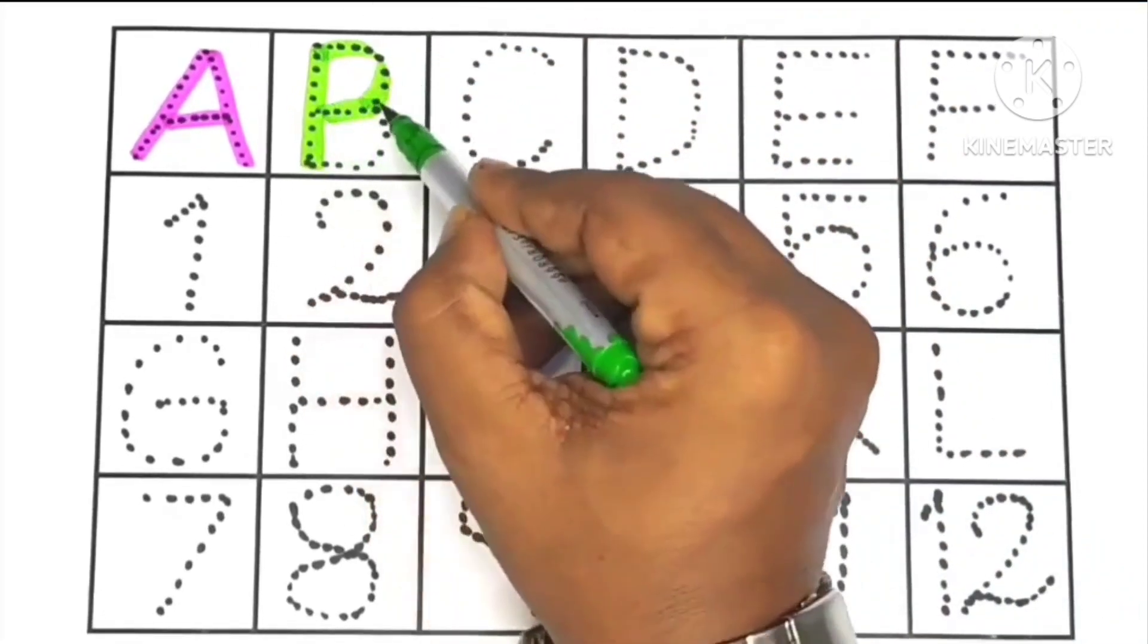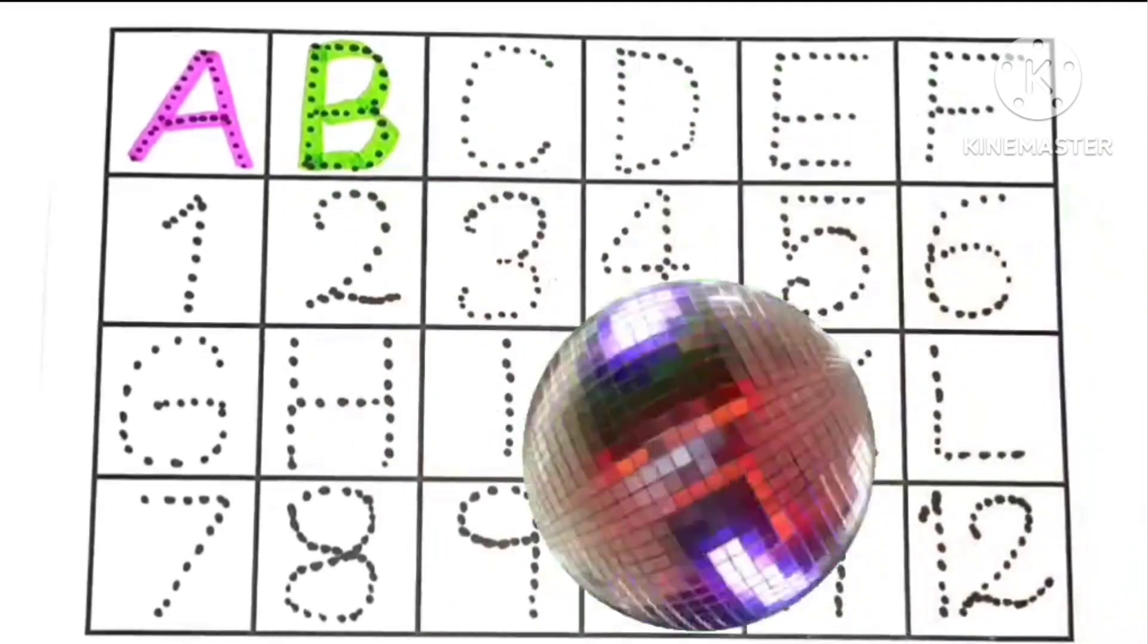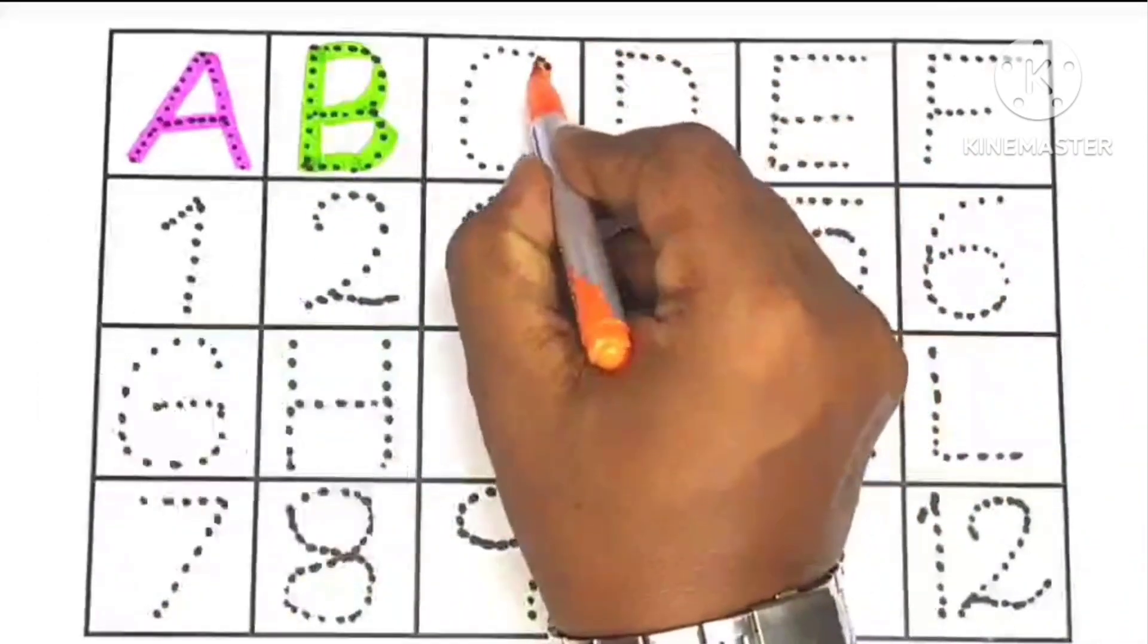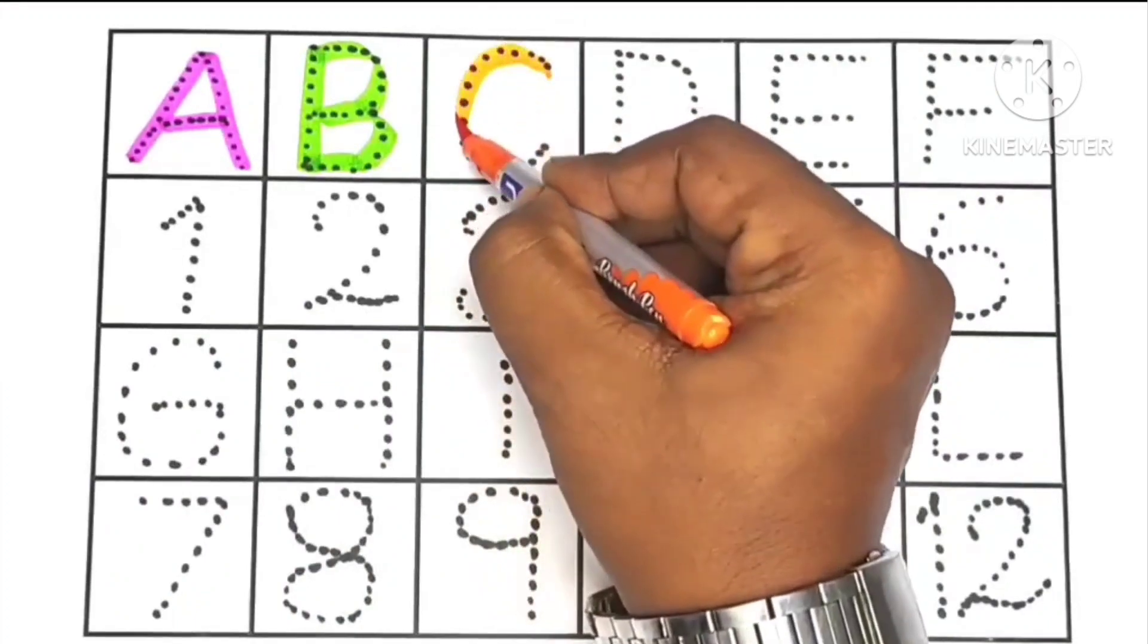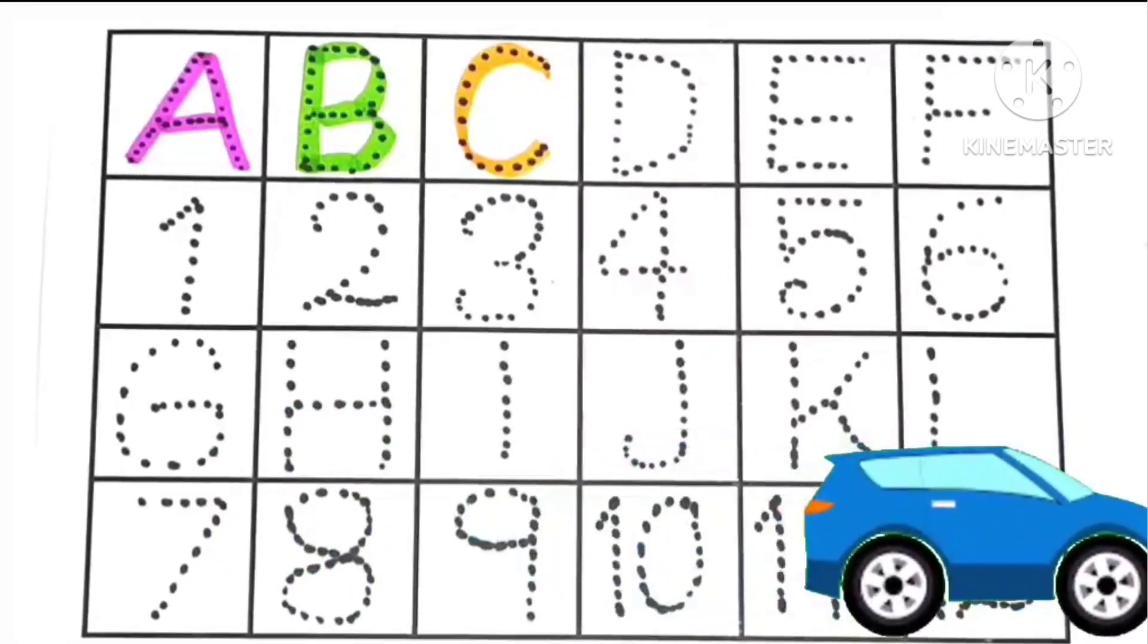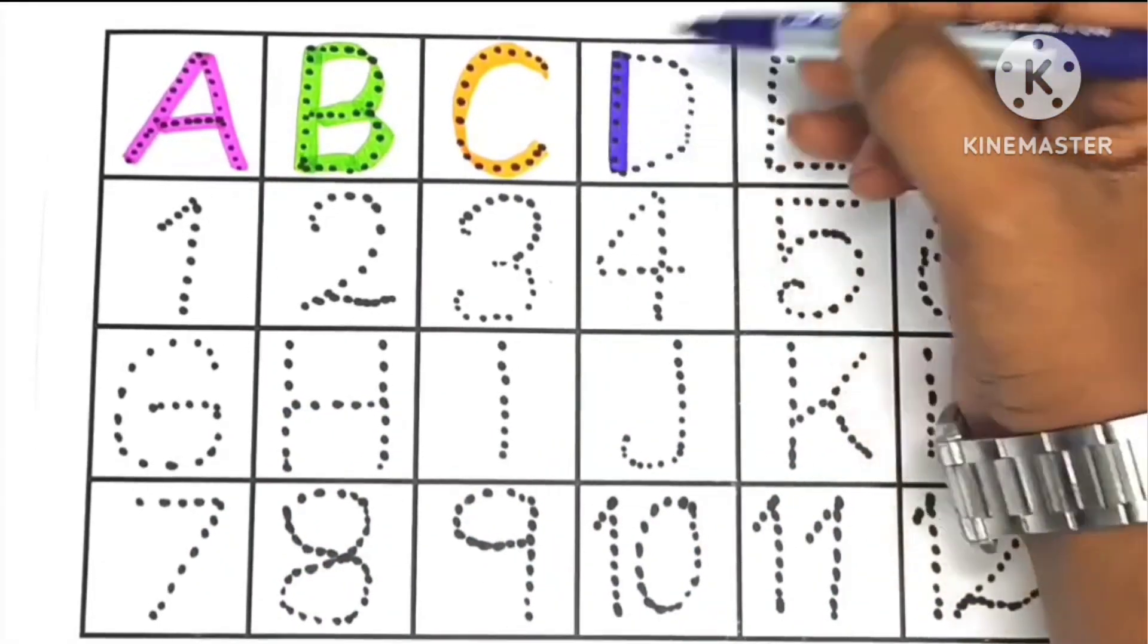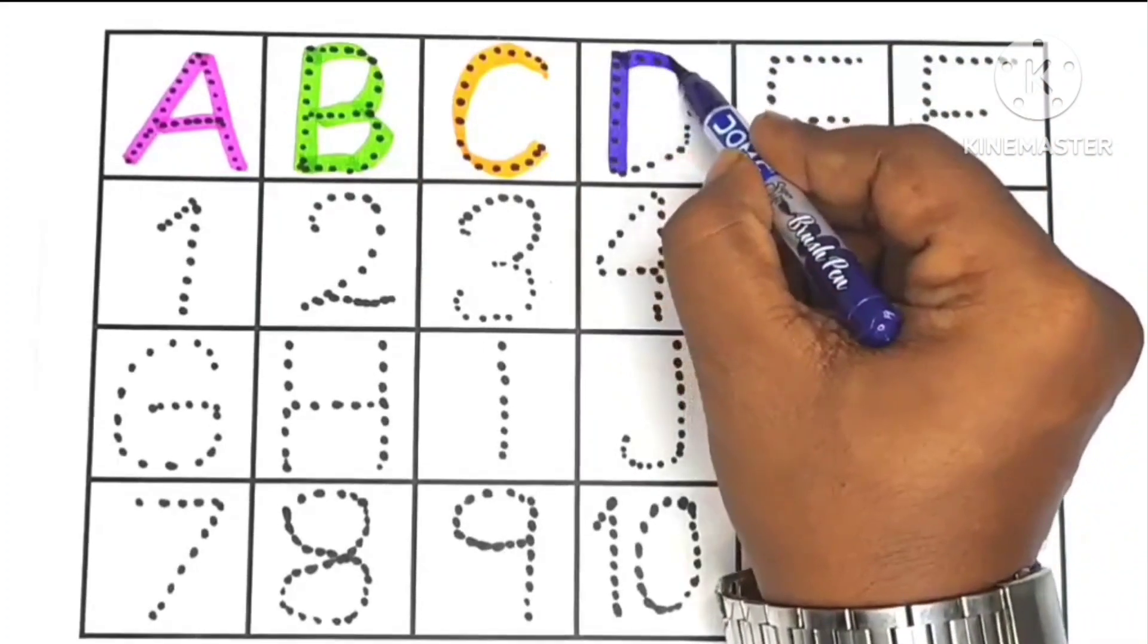A ke baad kya aata hai bachyo? B, B for ball. C, B ke baad kya aata hai bachyo? Next of B, C, C for car, C for cherry. After C it comes D. C ke baad kya aata hai?